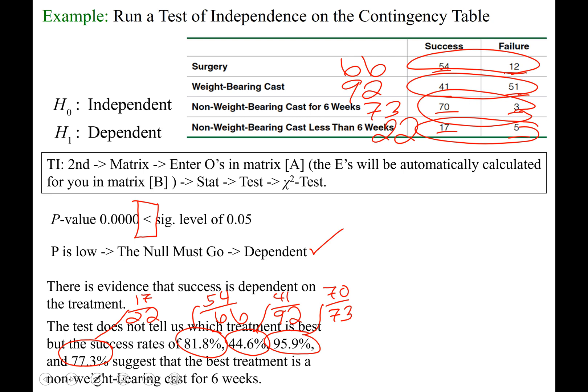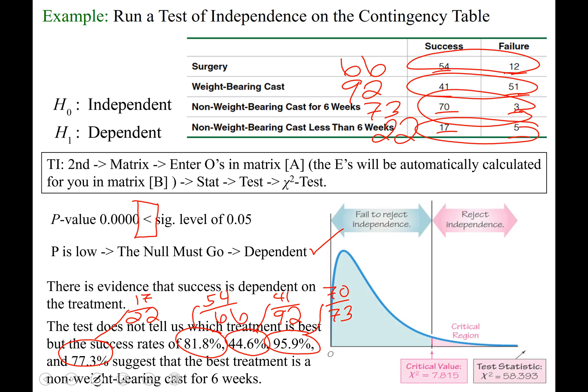Okay, so the success rates suggest that the best treatment is the non-weight-bearing cast for six weeks. Here's a visual, just to give you a full perspective of what you just did.